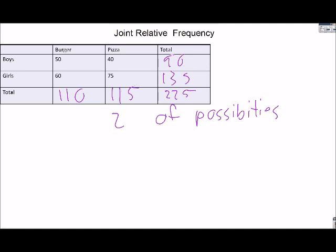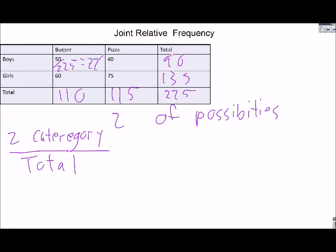So it doesn't matter which direction you go. So joint frequency says I'm looking at boys of the total. So what I'm going to do is you're going to take your two category box and you're going to divide it by the total. So 50 divided by 225, which means that there is a 22% chance that if I pick someone randomly of the 225 it's going to be a boy who likes burgers.